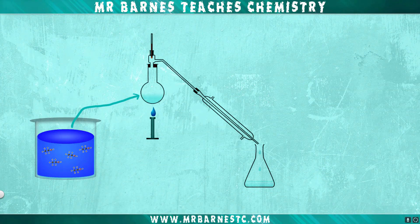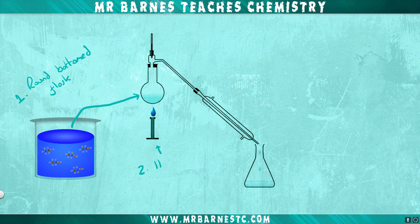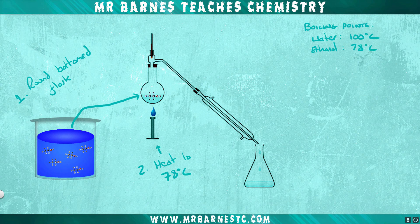To carry out simple distillation, firstly you need to get your solution and put it into a round bottom flask in the following distillation setup. You then want to heat your solution to 78 degrees C — that is the boiling point of ethanol. Water has a boiling point of 100 degrees and ethanol has a boiling point of 78, meaning when you heat the solution to 78 degrees the ethanol will evaporate first.